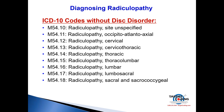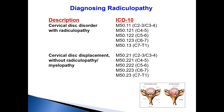Here again are the radiculopathy codes without disc disorder: M54.10 unspecified — avoid it; M54.11 occipital-atlantoaxial level; M54.12 cervical; M54.13 cervicothoracic; M54.14 thoracic; M54.15 thoracolumbar; M54.16 lumbar region; M54.17 lumbosacral; M54.18 sacral and/or sacrococcygeal radiculopathy.